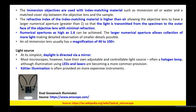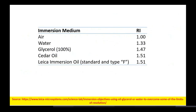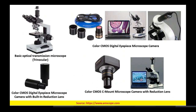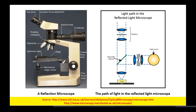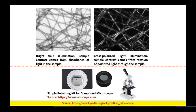We discussed the light source, immersion mediums, and condensers. Then we talked about the different types of microscopes and cameras, the inverted microscope, and the reflection microscope — how it differs from the normal upright microscope. Then we talked about bright field illumination and cross polarized illumination, and how the background in each of these differs.